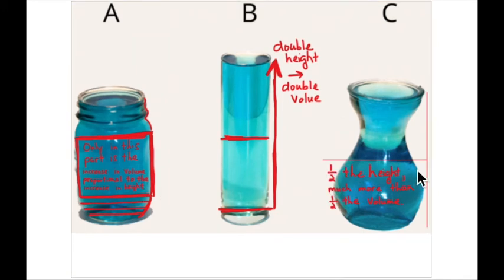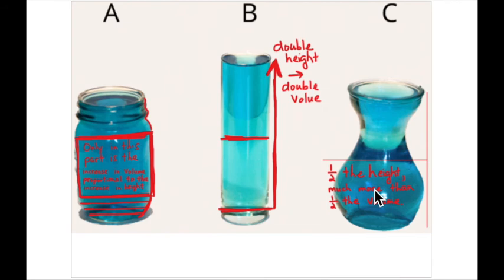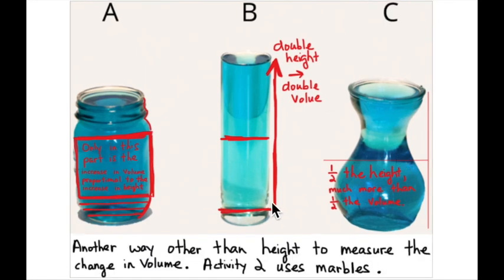For the last container, there's no place where you can get an idea of the volume based on height. If you look at the halfway point by height, there's much greater volume in the bottom half than the top half. You can't tell exactly what the volume is — the bottom half holds far more than the top half. You need some other way besides height to measure the change in volume.